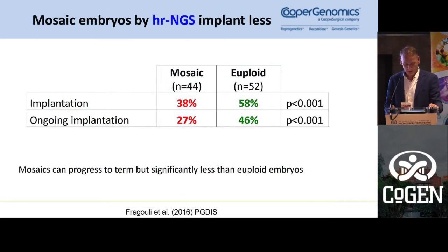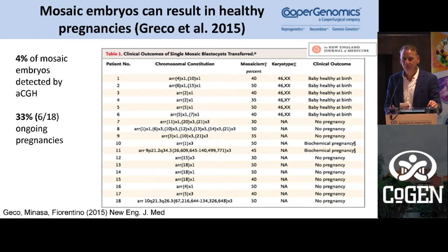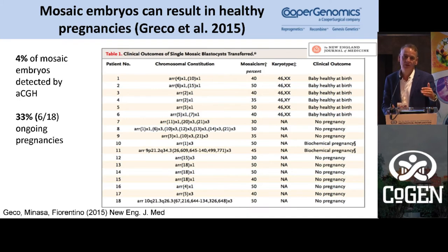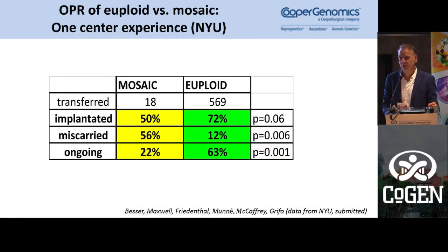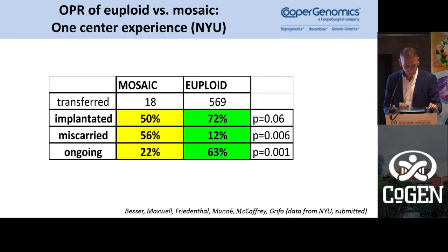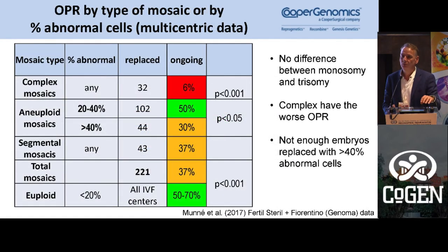Data by Fragouli shows mosaic embryos implant less than normal embryos, and this has now been published by at least three groups. Some of these embryos can still make it to a baby — as shown in the famous paper by Greco and Fiorentino. So mosaics miscarry more and implant less, but some can still produce a baby. This makes sense given that about 40% of embryos whose trophectoderm was mosaic had a normal inner cell mass. Data from one of our collaborating centers shows the ongoing pregnancy rate when transferring a mosaic is much lower than when transferring a euploid embryo.